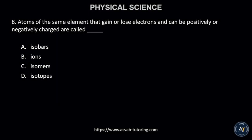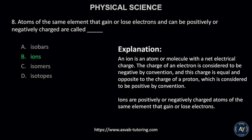Number 8. Atoms of the same element that gain or lose electrons and can be positively or negatively charged are called A. Isobars, B. Ions, C. Isomers, or D. Isotopes. The correct answer is B. Ions.